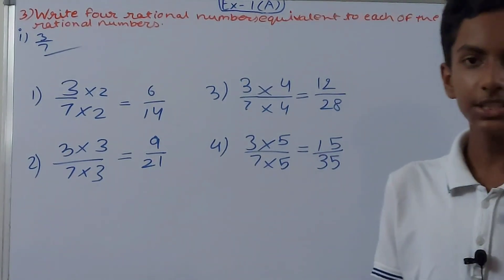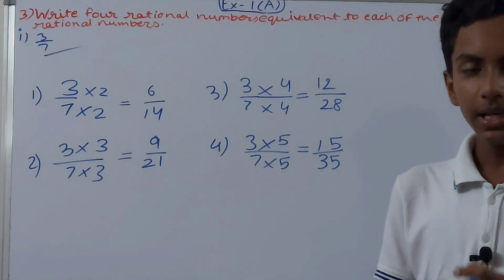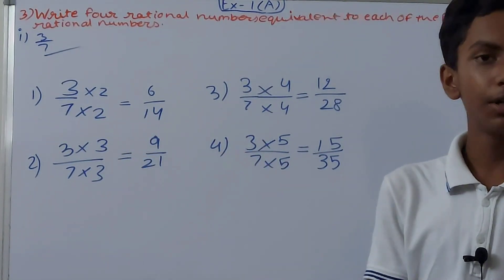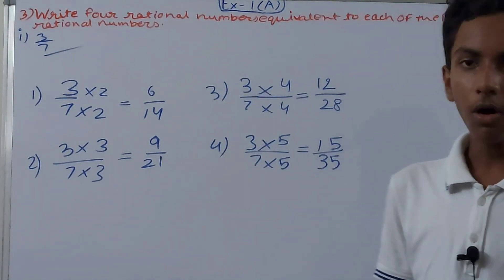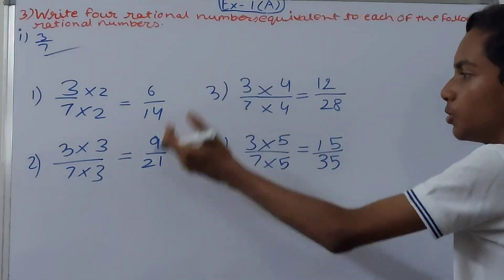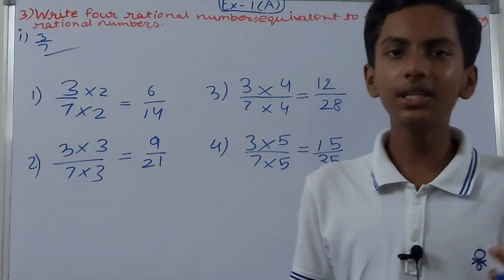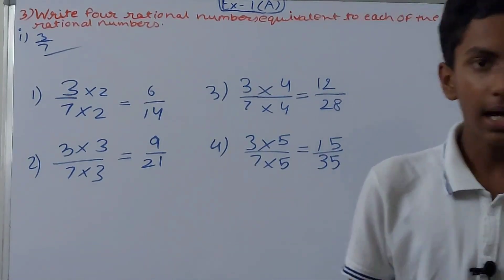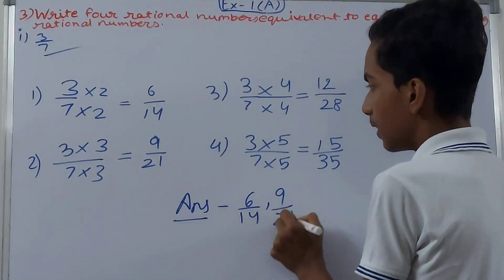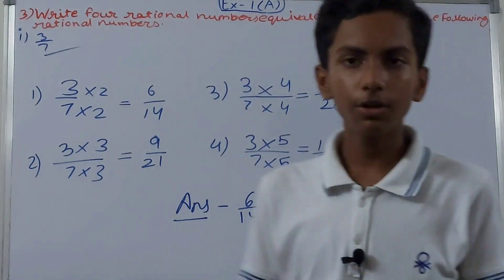Basically, what we have done is multiply numerator and denominator both with the same number. First we used 3 into 2 and 7 into 2. You can use any number you want — 5, 10, 15, or 2, 3, 4, 5. Here I'll use 2, 3, 4, and 5 just to keep it easy. Remember, once you've used a number for multiplying, you cannot use it again. So the four equivalent rational numbers are: 6 by 14, 9 by 21, 12 by 28, and 15 by 35.